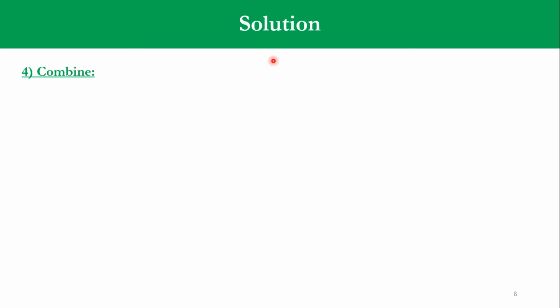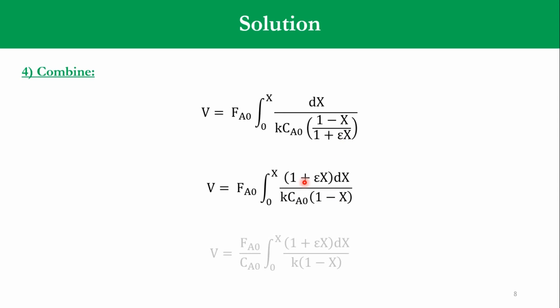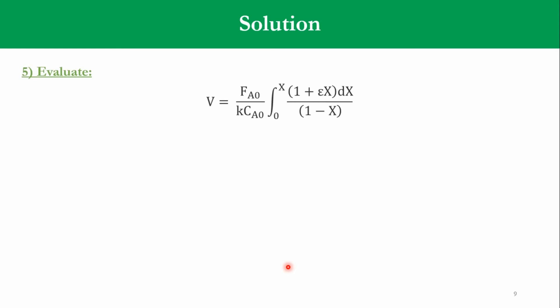Once we combine these concepts, accordingly V is equal to FA0 integral 0 to x dx over minus Ra and that is KCA and CA is equal to CA0 1 minus x over 1 plus epsilon x. Once we rearrange it, FA0 will be the same, integral will be the same. This KCA0 1 minus x will remain in the denominator while this 1 plus epsilon x will go to the numerator.